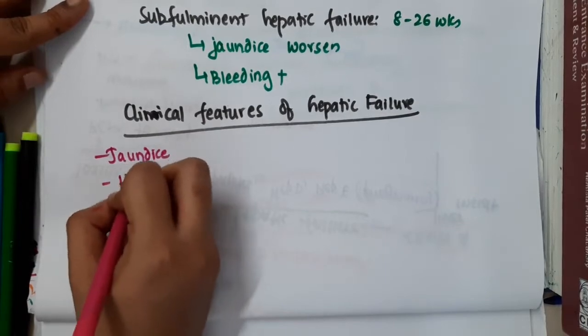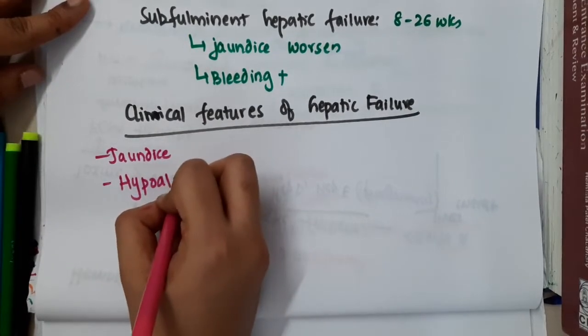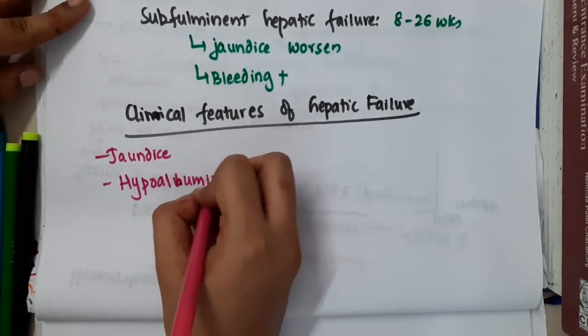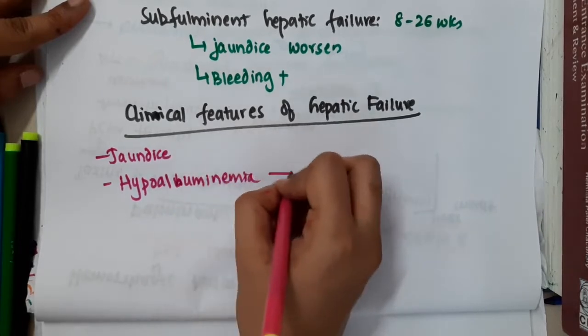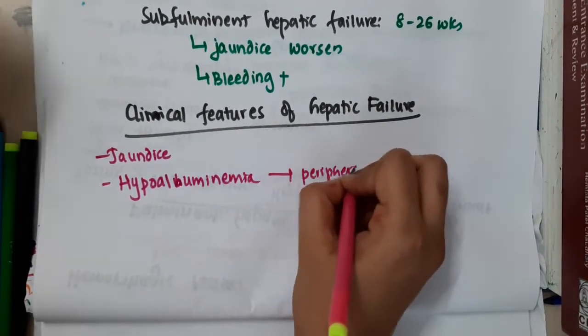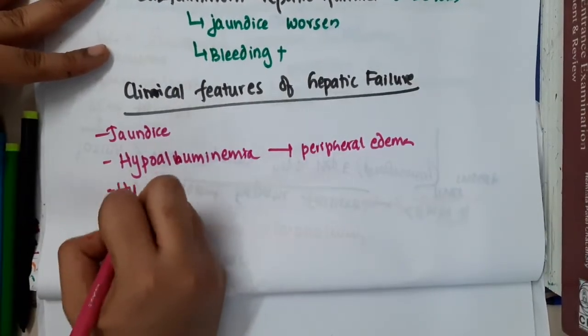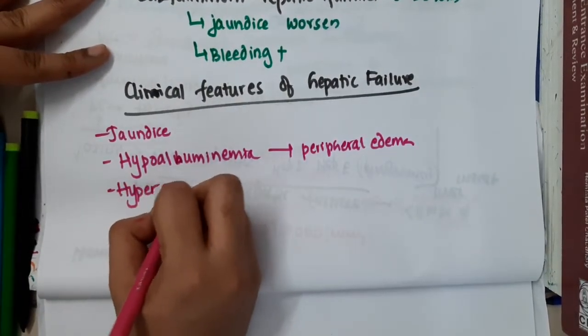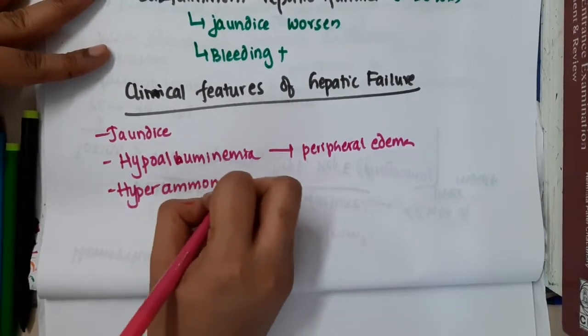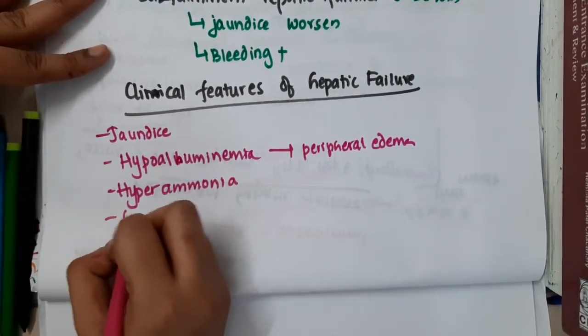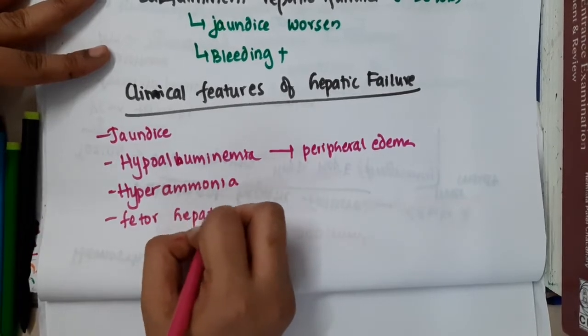Then hypoalbuminemia will be seen. This will predispose to peripheral edema. Then there will be hyperammonemia. You will see presence of hyperammonemia will be seen. Then there will be fetal hepaticus.